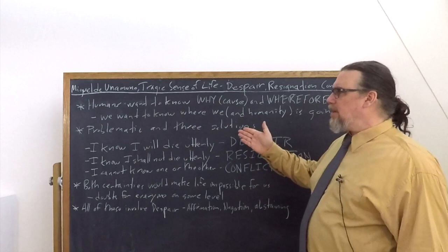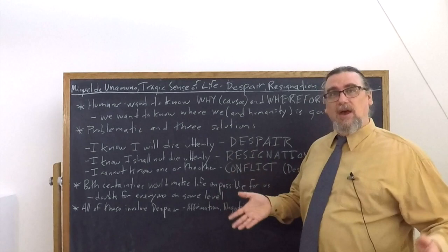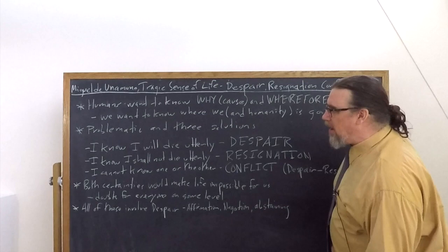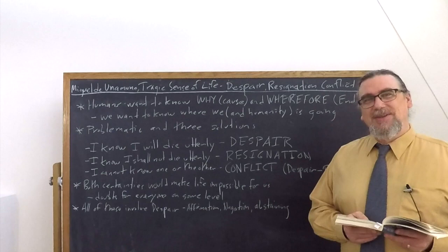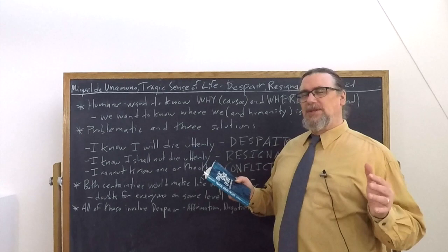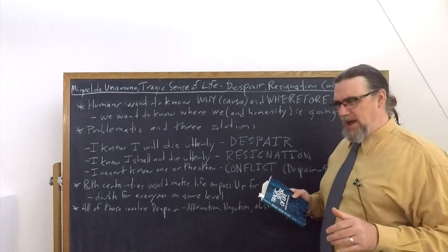What if you take the opposite? I know I shall not die utterly, meaning I'm absolutely certain I will not die. And then he says something quite interesting here: resignation. Resignation about this existence that we're in. In a certain sense, having absolute certainty of your immortality, of the fact that you will somehow go on, takes something out of life, takes something out of the living that you're engaged in.